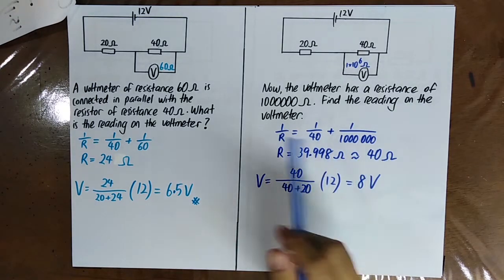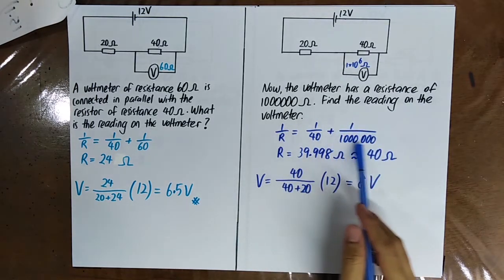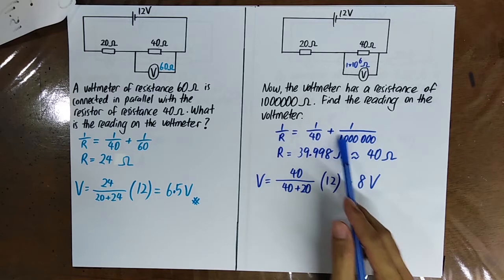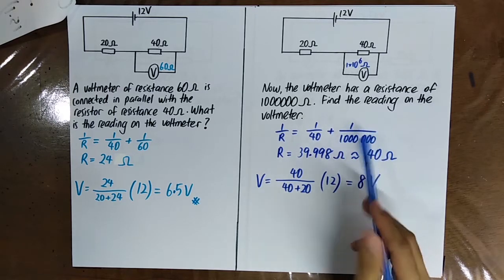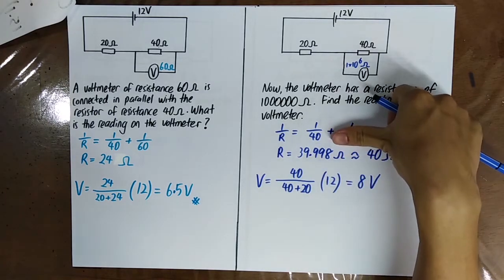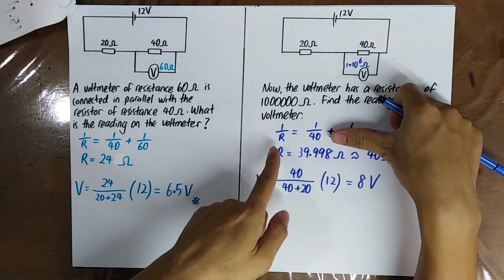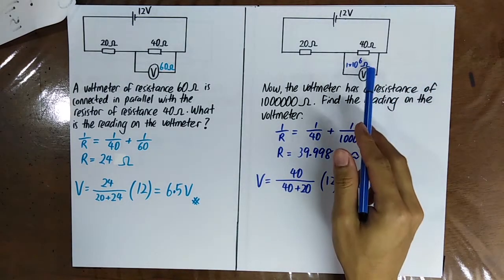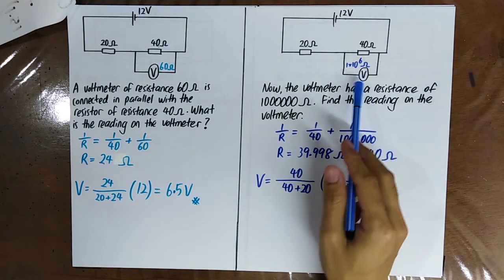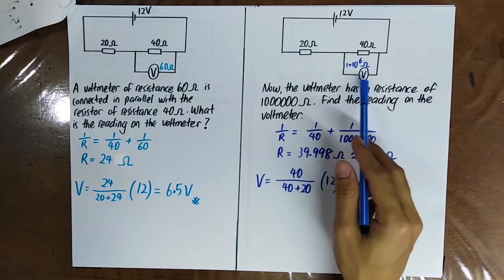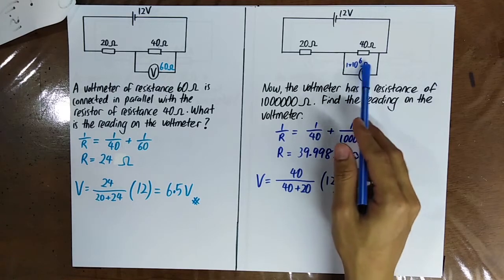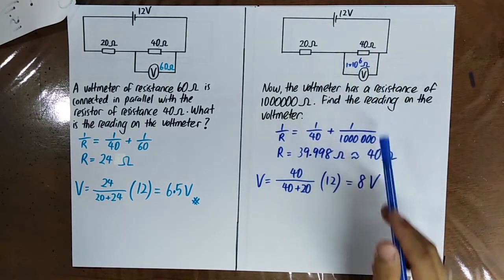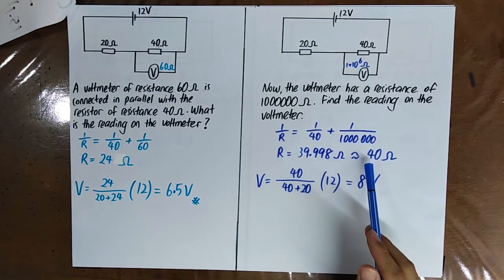Even if you don't have a calculator, you'll know that this term is very small, so this whole term is almost equal to zero. Therefore, R is almost equal to 40 ohm. So you'll know that when the voltmeter has a very, very high resistance, the equivalent resistance actually does not change.